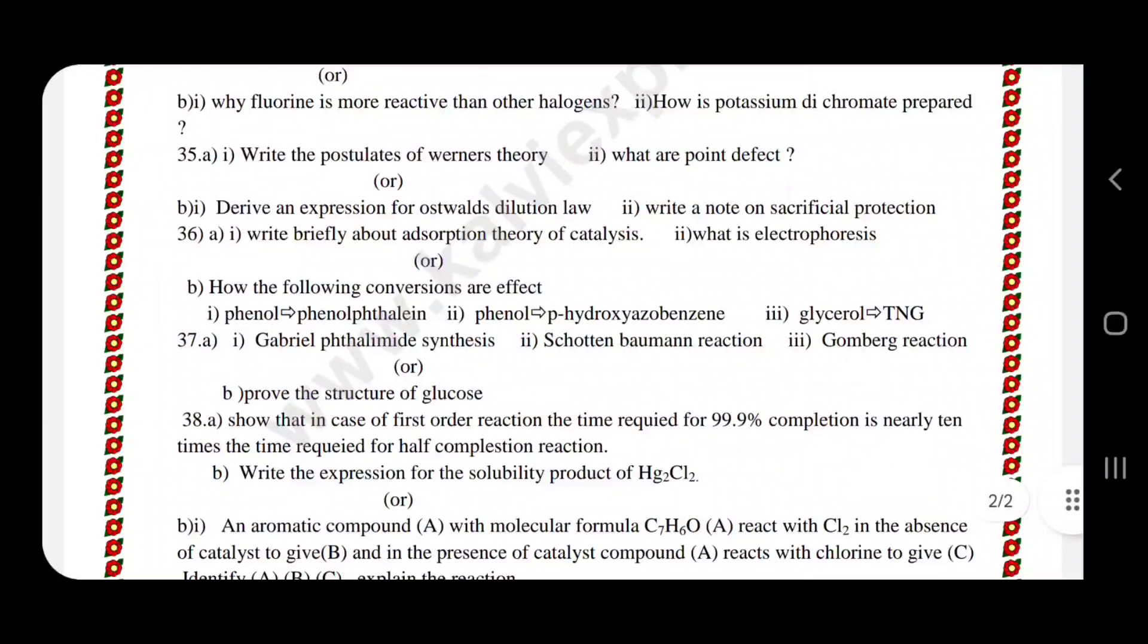This is part B. Phenol to phenolphthalein, phenol to hydroxybenzene, glycerol to TNG. This is the naming reaction. Phenol to phenolphthalein, phenol to p-hydroxyazobenzene, our coupling reaction. Glycerol to TNG, how TNG is prepared, this is the naming reaction.